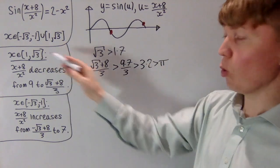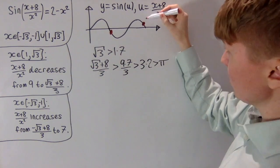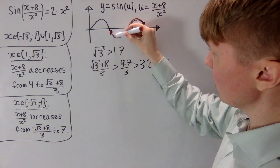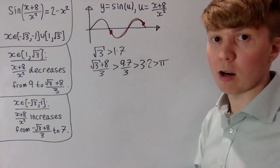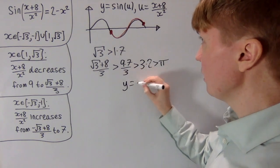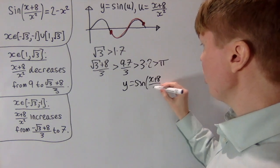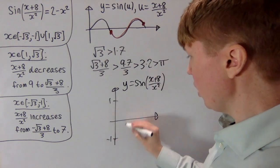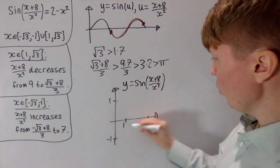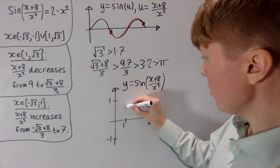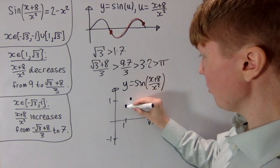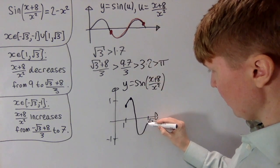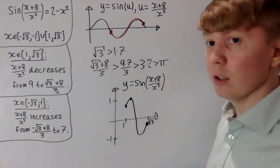As x increases from 1 up to root 3, sine of (x+8)/x² starts just above 0, goes up to 1, comes down through 0 to minus 1, then increases again but stops before reaching 0. So in a sketch of y equals sine((x+8)/x²) in the first region, we start just below 1, rise to a turning point at 1, drop all the way down to minus 1, then increase again stopping before 0 at x equals root 3.